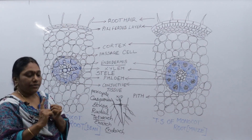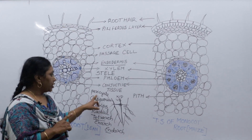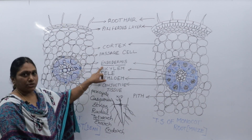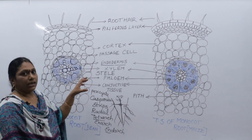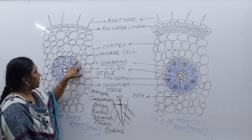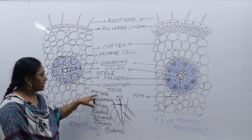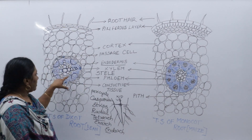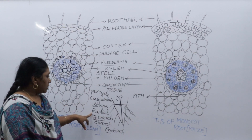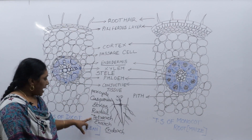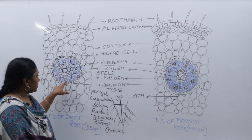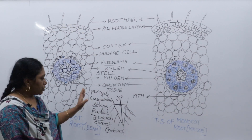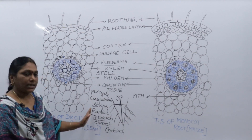One important point about pericycle: this is the site from where lateral roots will arise. The endodermis has casparian strip thickenings. Inside the pericycle, xylem and phloem are arranged at different radii — so the arrangement is radial. There are four xylem groups — tetraarch — and protoxylem faces outside the center, so it is exarch.